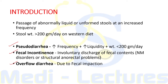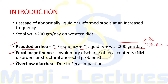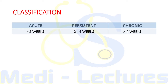Diarrhea must be differentiated from pseudo-diarrhea, fecal incontinence, and overflow diarrhea. In pseudo-diarrhea, there is increased frequency of stools with increased liquidity but weight is less than 200 grams per day — seen with irritable bowel syndrome and proctitis. Fecal incontinence involves involuntary discharge of fecal contents due to neuromuscular disorders or structural problems. Overflow diarrhea is due to fecal impaction seen in nursing home patients.